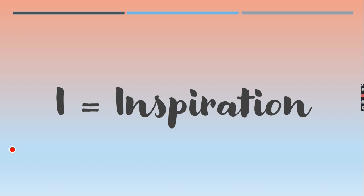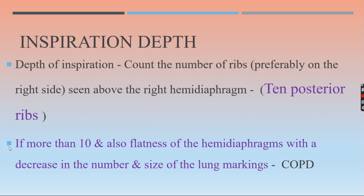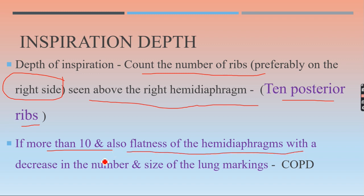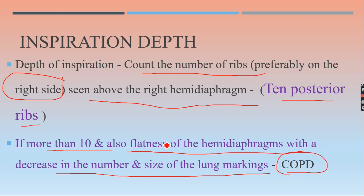I stands for inspiration — the chest X-ray frame should be in full inspiration. To verify, count the number of ribs, preferably on the right side, seen above the right hemidiaphragm. If 10 posterior ribs are present above the right hemidiaphragm, that indicates full inspiration. If there are more than 10 posterior ribs along with flatness of the hemidiaphragm and a decrease in number and size of lung markings, that is suggestive of COPD — chronic obstructive pulmonary disease.